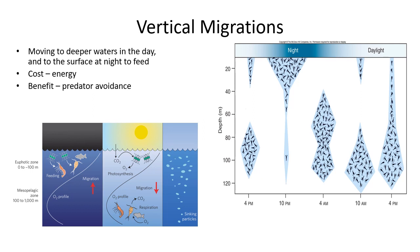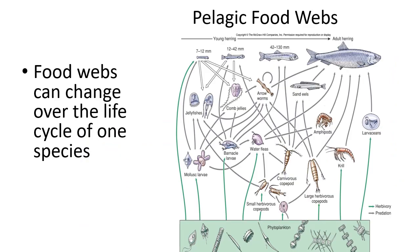Migrations occur up and down the water column — we call these vertical migrations. In the daytime, organisms are very visible and predators are around, so they go to deeper waters during the day. At night, they come up to feed on phytoplankton, zooplankton, and other things. This allows them to avoid predators. It does require energy, but the benefit is they don't get eaten. Food webs in this zone are generally short — getting from phytoplankton and zooplankton to larger fish doesn't require many steps because habitat diversity is not very great.